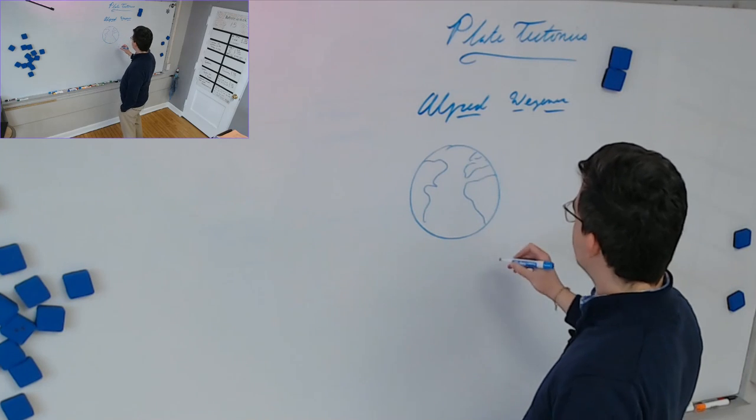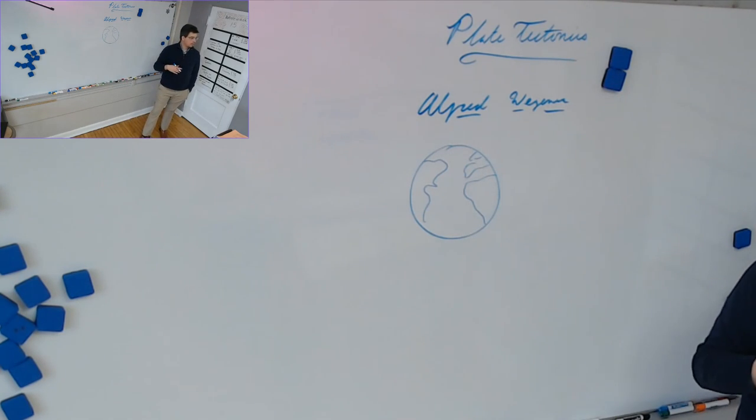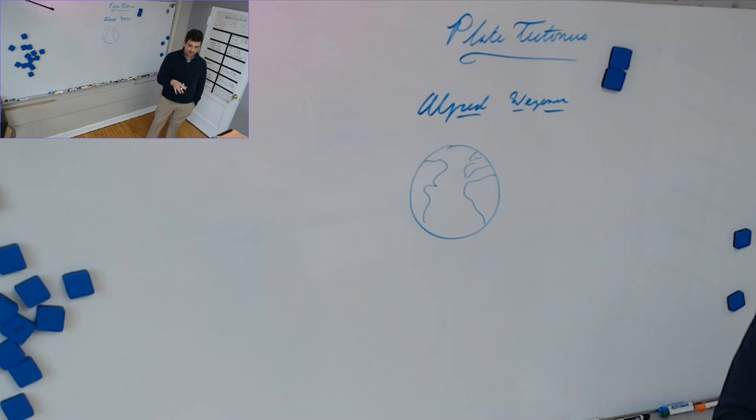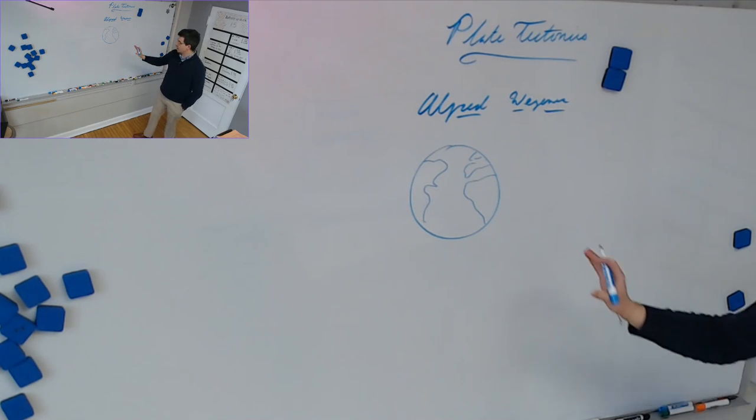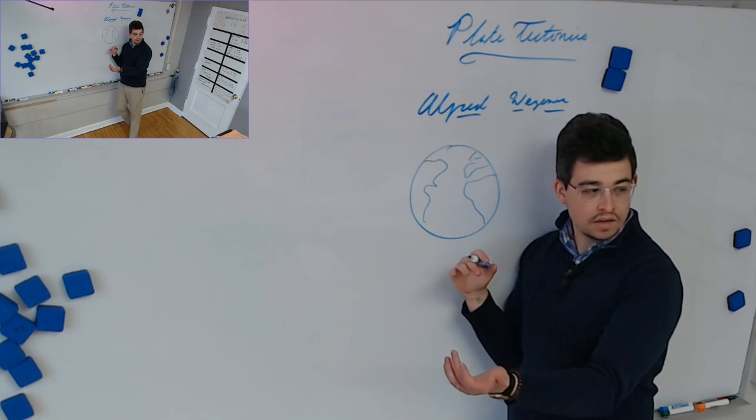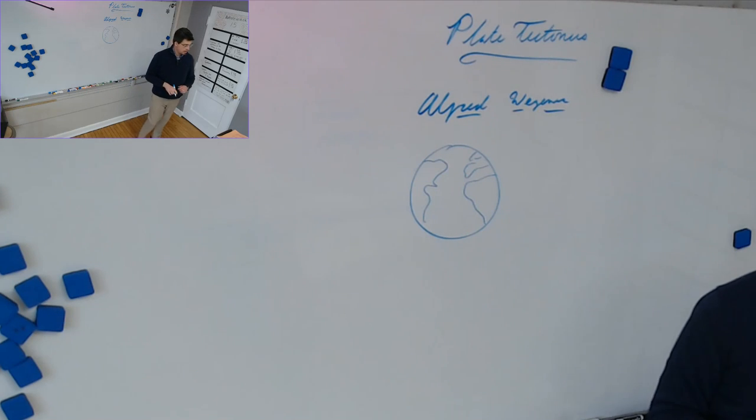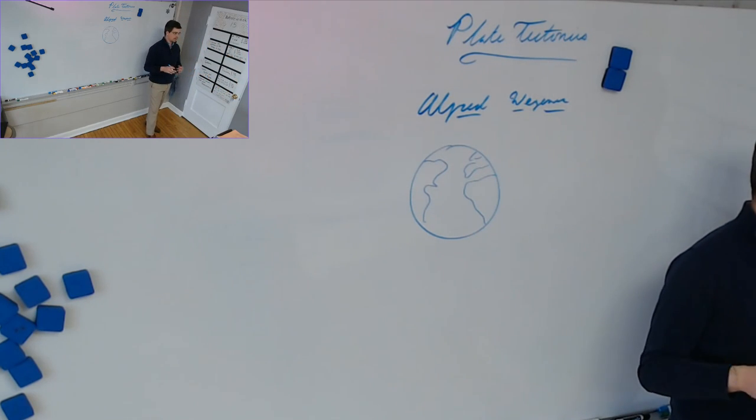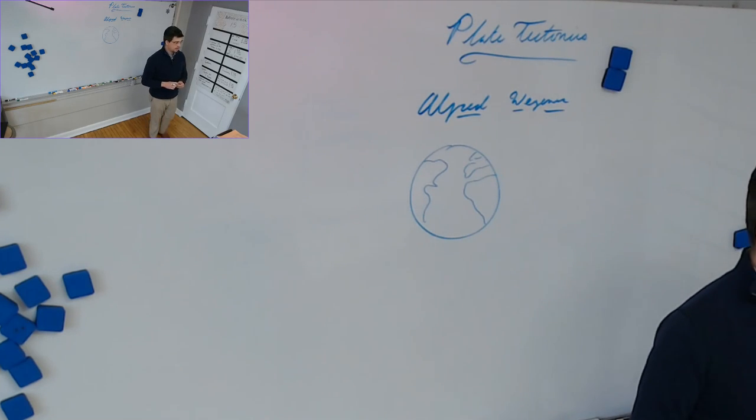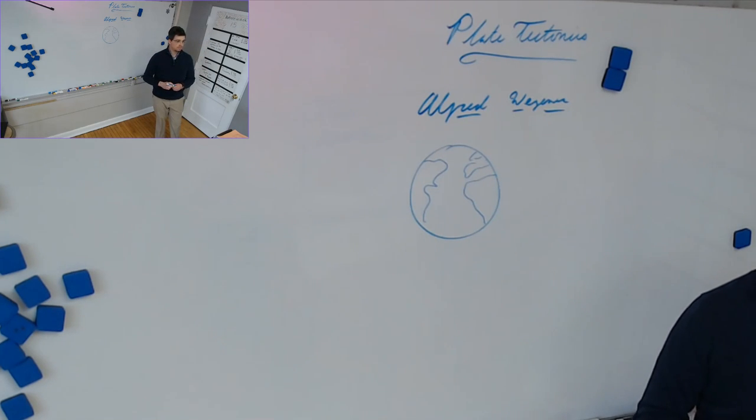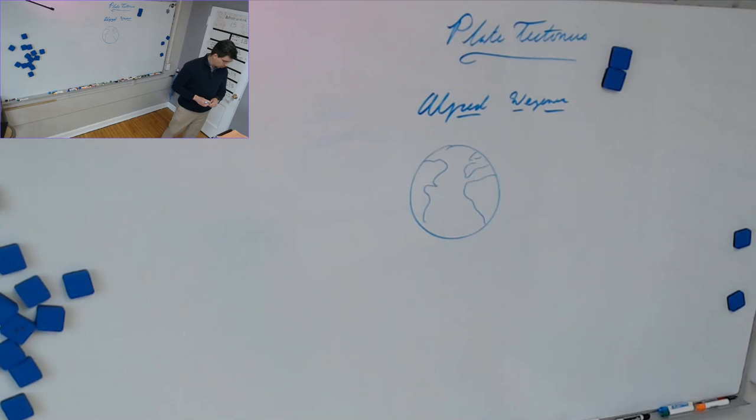He looked at a map of planet Earth and thought, wouldn't it be neat if all of these, since they kind of look like they fit together, actually had fit together? That was the origin of his hypothesis. Is that evidence? I mean, you could make the case that it's pretty sketchy evidence, but no, it's not scientific evidence. It was the impetus of his idea, so it was useful, but it wasn't hard evidence in the way that we normally think of scientific evidence.